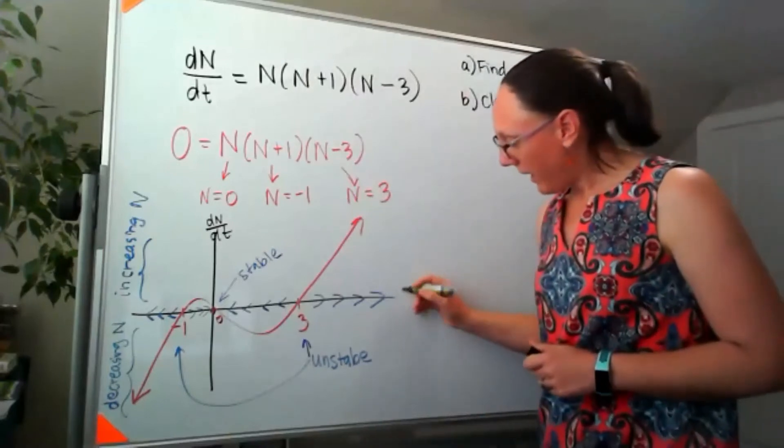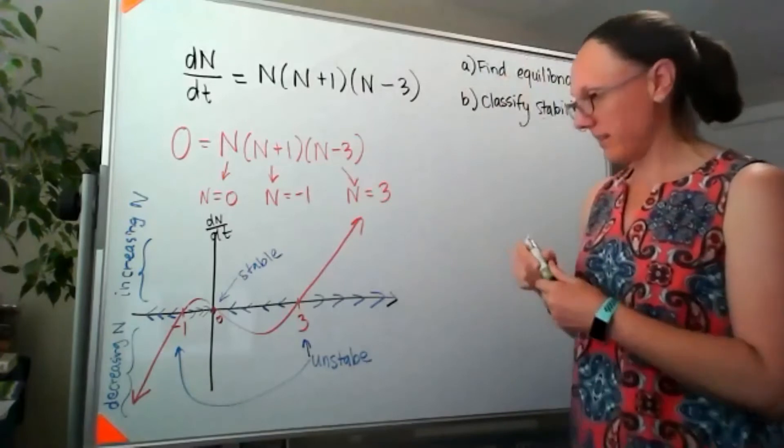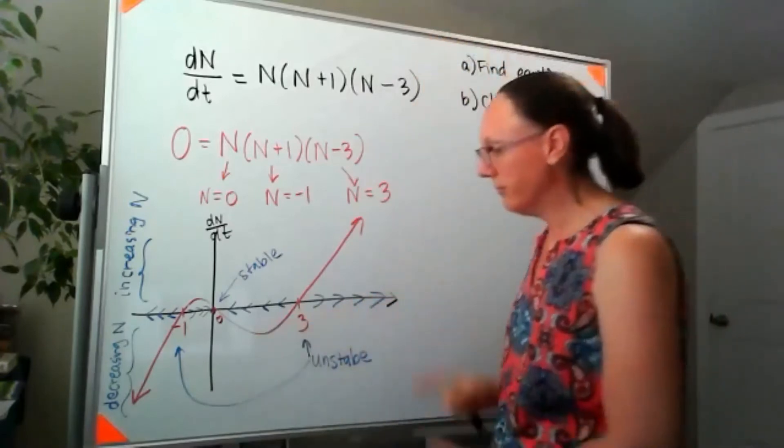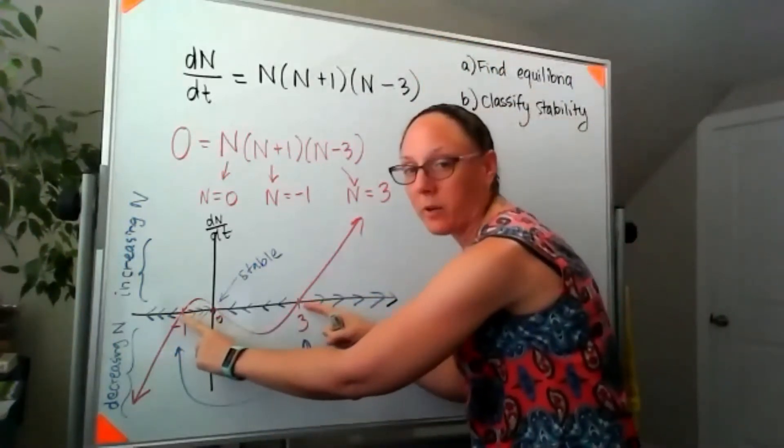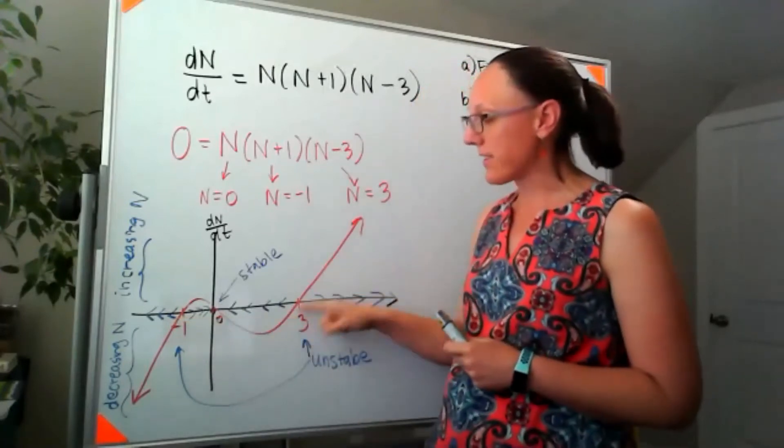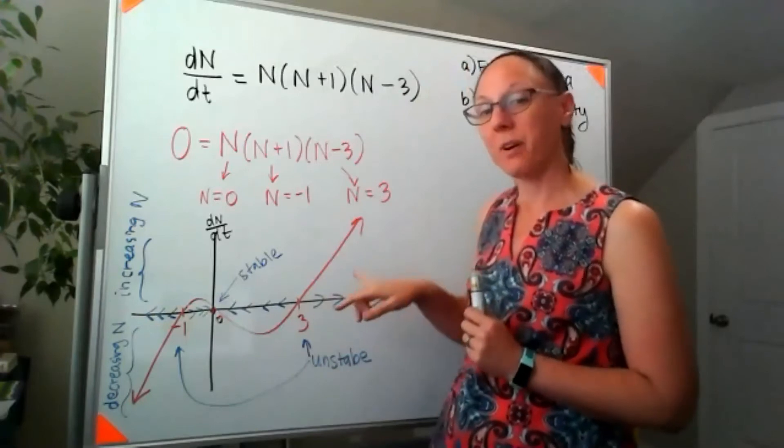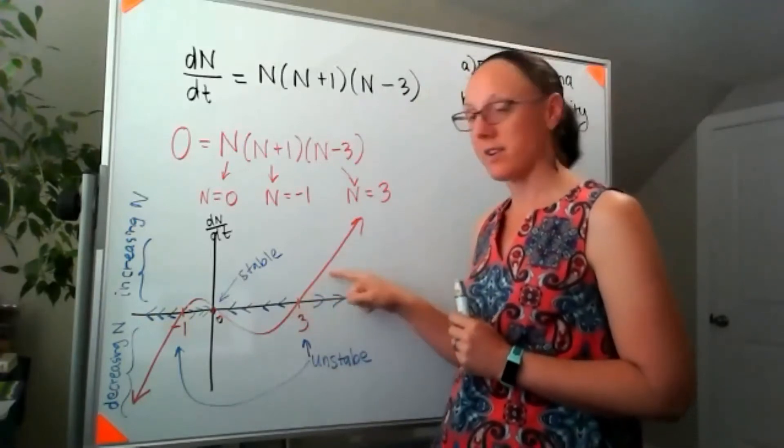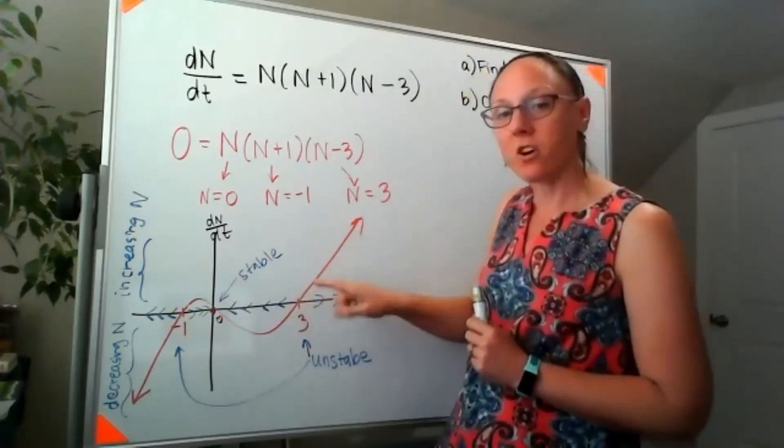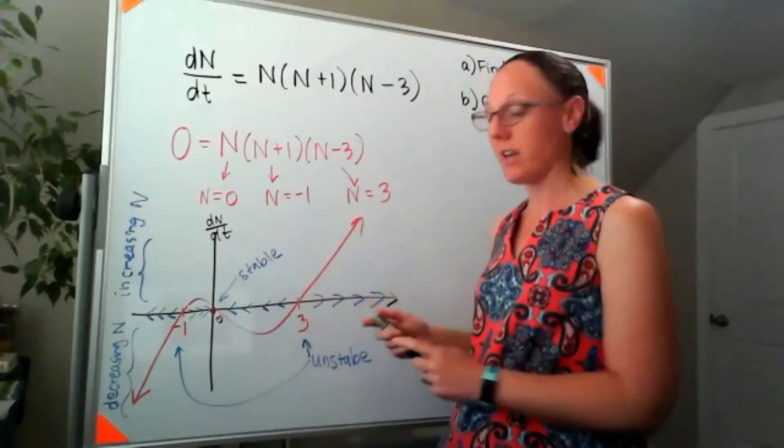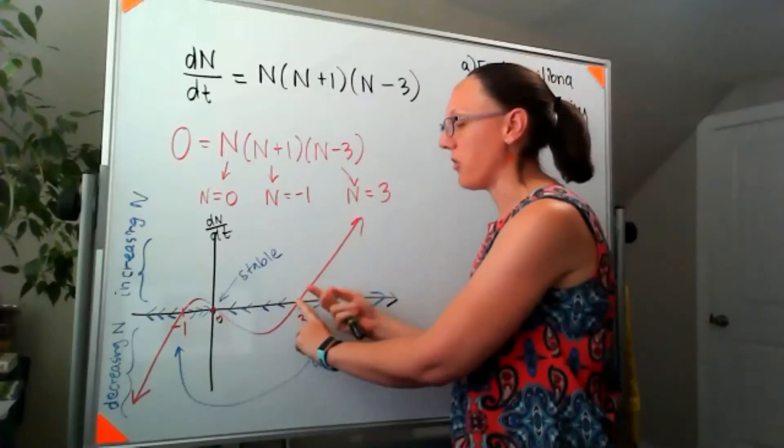So if I look at my two unstable equilibria, as they pass through this axis, you'll notice that the slope of this curve is positive. And the slope of this curve being positive at that equilibria is going to mean that on the right hand side, my arrows move to the right and on the left hand side,